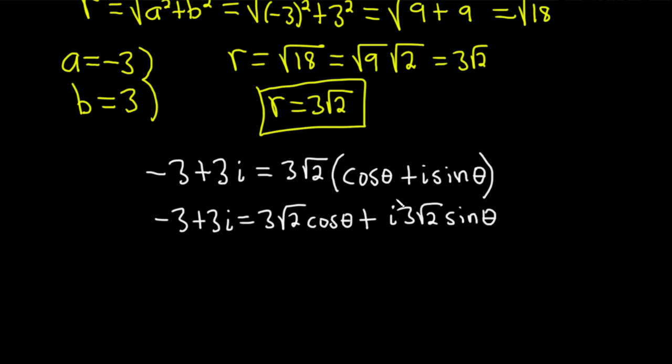So on the left-hand side, we have a complex number. And on the right-hand side, we have a complex number. Two complex numbers are equal if and only if the real parts are equal and the imaginary parts are equal. So that means that negative 3, that's the real part on the left-hand side, is equal to the real part on the right-hand side. So we have that negative 3 is equal to 3 square root of 2 cosine theta. Beautiful.